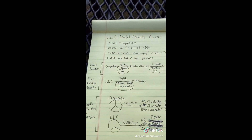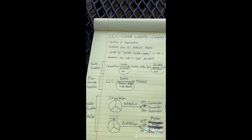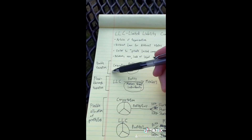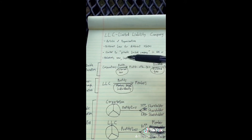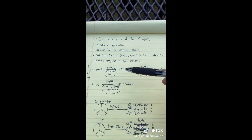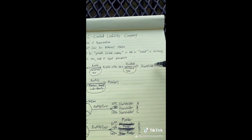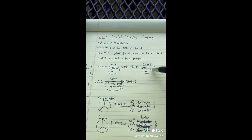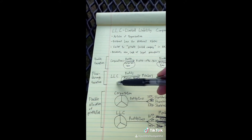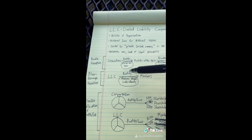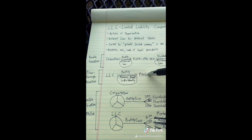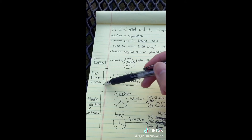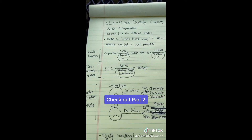There are a few differences that distinguish LLCs from corporations. One is that LLCs are able to avoid double taxation. When corporations earn profits they're charged a corporate tax, and if they distribute profits to shareholders through dividends they're charged a dividend tax — that's double taxation. For LLCs, when the company earns profits it can distribute them directly to members, and the members are taxed individually. This is called flow-through taxation.